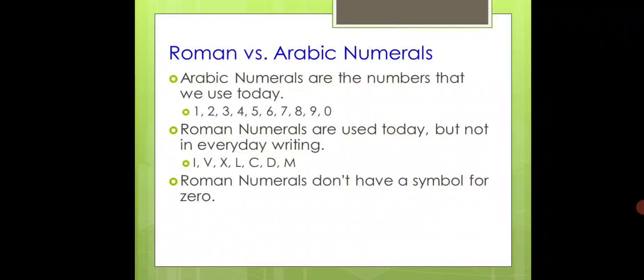Roman versus Arabic numerals. Arabic numerals are the numbers that we use today. Which are Arabic numbers? We have read first because we use our daily routine life: 1, 2, 3, 4, 5, 6, 7, 8, 9, and 0. What do we call Arabic numerals?